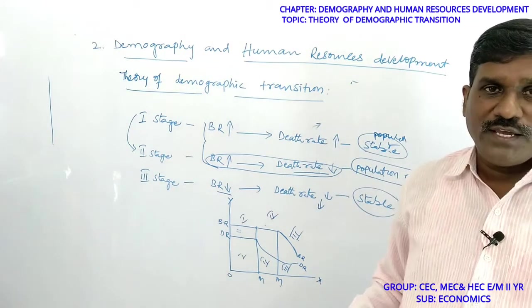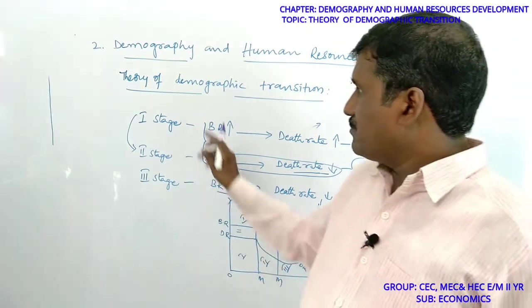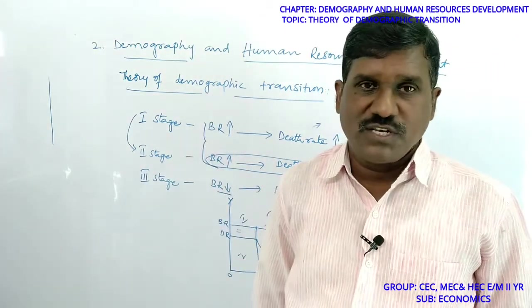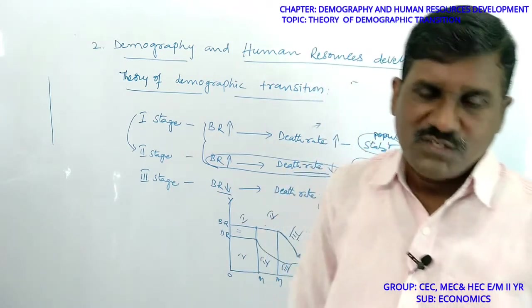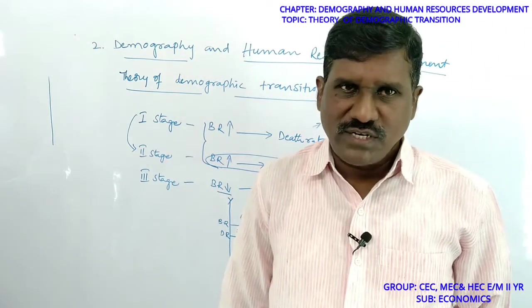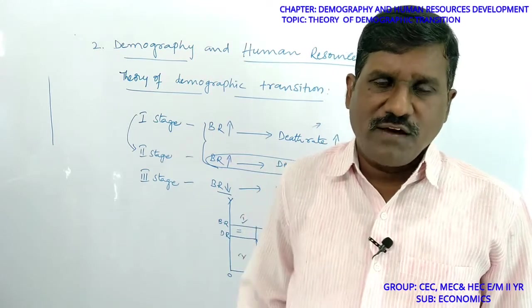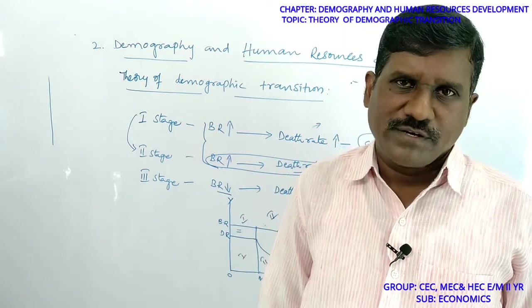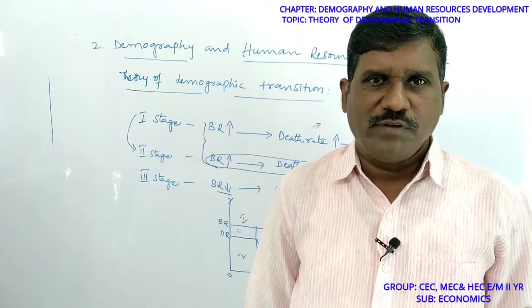This is the explanation of the Theory of Demographic Transition, which was developed and explained by TR Malthus. Students, this is the Theory of Demographic Transition — it is a mostly important question. Thank you very much.